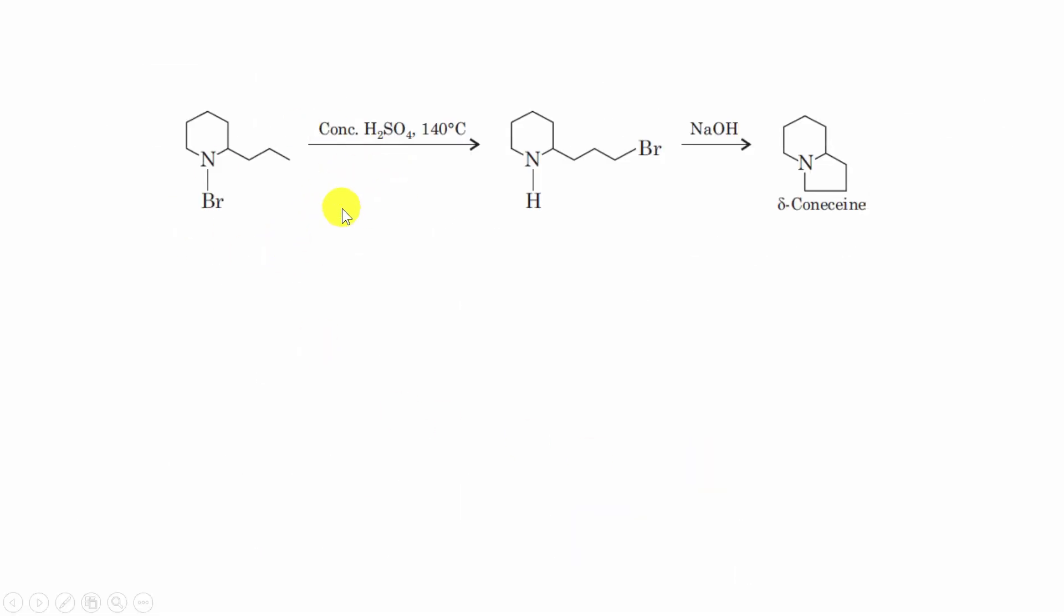It is one of the important examples of this reaction. Here, a pyrrolidine derivative, conicine—delta conicine—is obtained from this N-halogenated cyclic alkane by Hofmann-Löffler-Freytag reaction.